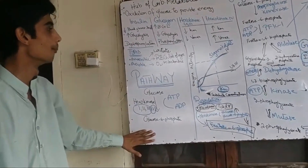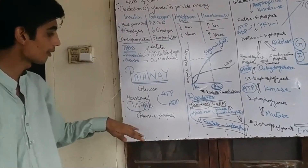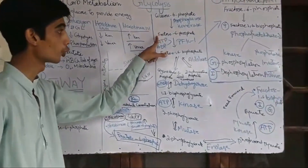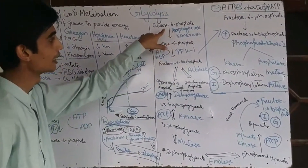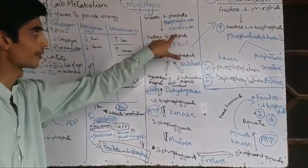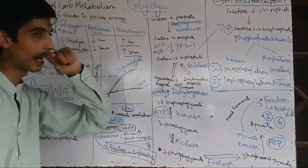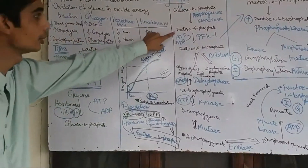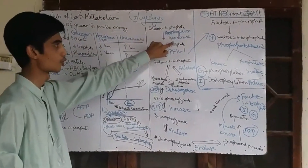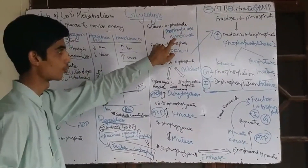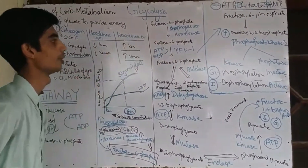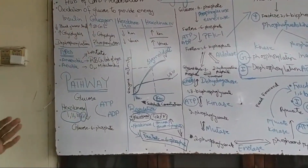The second step of glycolysis is reversible: glucose 6-phosphate is converted into fructose 6-phosphate by the enzyme Phosphoglucose Isomerase. Glucose is an aldose sugar and fructose is a ketose sugar, so this is an isomerization reaction.